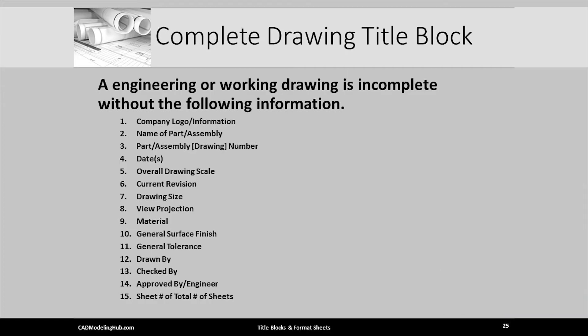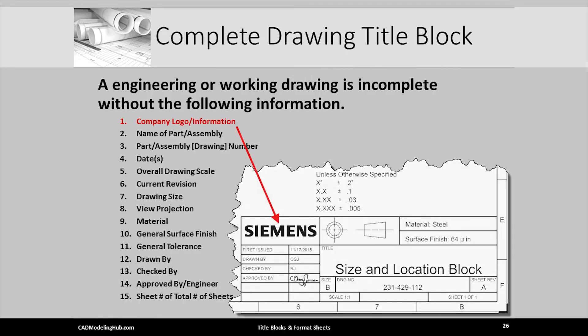Let's see where each of these bits of data are placed in the Siemens title block. Here is the Siemens logo. One can simply edit this cell of the title block table and replace it with your personalized or company logo and address.